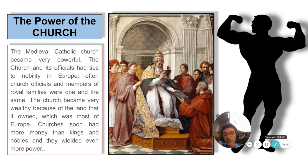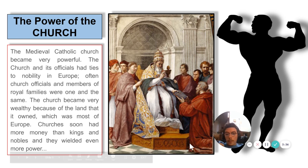The power of the church: the medieval Catholic Church became very powerful. The church and its officials had ties to nobility in Europe, and often church officials and members of royal families were one and the same. The church became very wealthy because of the land that it owned, which was most of Europe. Churches soon had more money than kings and nobles, and they wielded even more power.